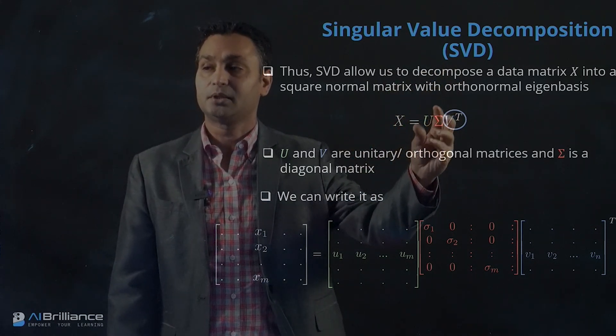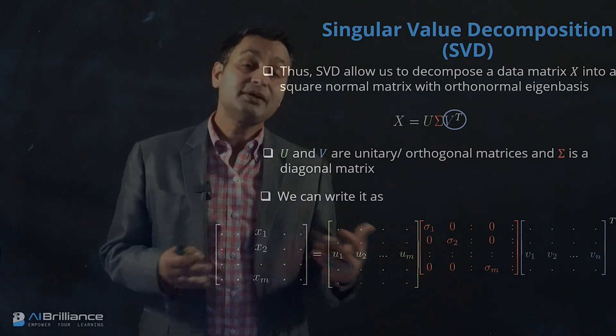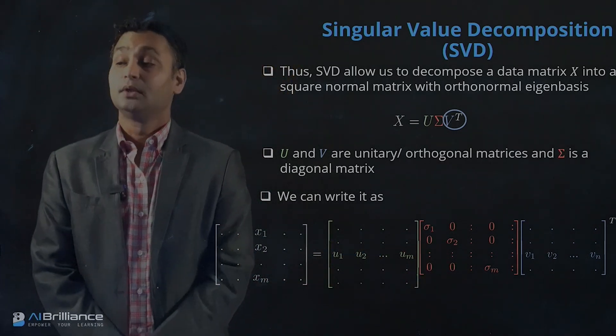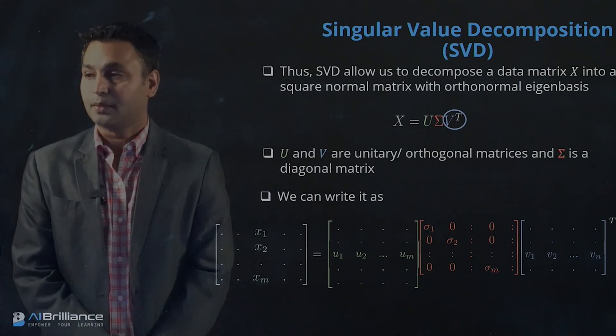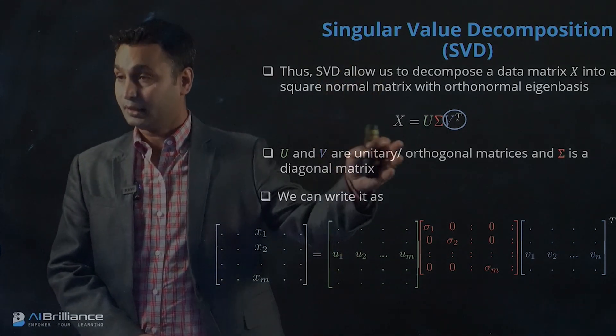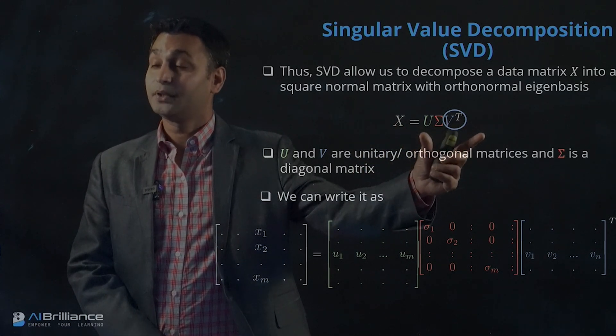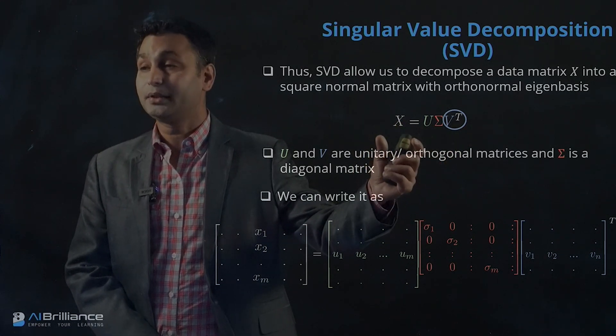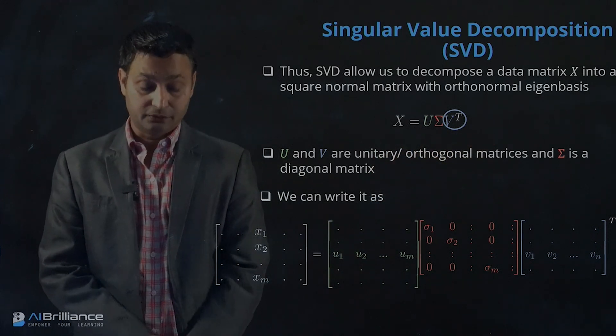This has utility specifically when we're talking about the overall data reduction process. Let's take an example problem and see how we can take an X and factorize it into three different matrices, and how we can write a general matrix X as a product of three different matrices of interest.